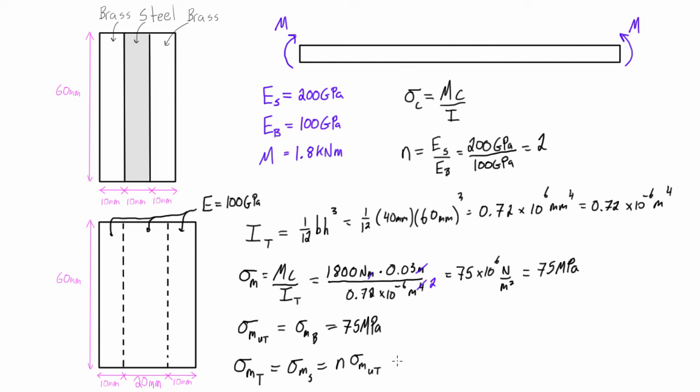So all we do here is we're just going to multiply 2 times 75 megapascals, and we're going to see that our max stress that we develop in the steel is actually 150 megapascals. So when you're doing these problems you have to make sure to do this last step to actually find out what the stress is in the transformed section, making sure you're accounting for that factor that we placed in earlier in the problem when we calculated the area.